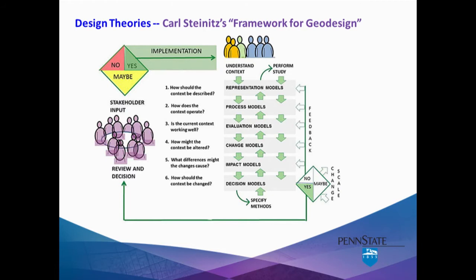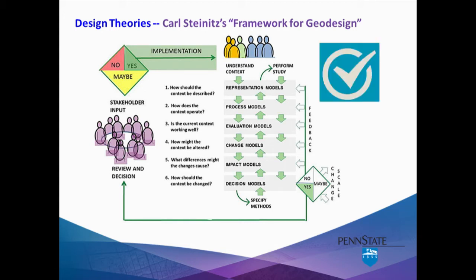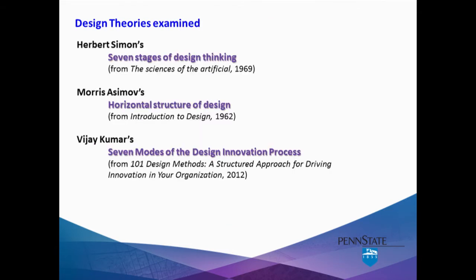Now there are, of course, many design theories, but I thought it would be valuable to compare a couple of those to discover commonalities which can then be matched to the widely recognized geodesign process — Dr. Steinitz's framework for geodesign. In a lightning talk, I don't have time to explain this framework; I trust many of you are familiar with it. My aim is to understand the essential aspects of other theories and compare those to Dr. Steinitz's approach, and when those theories align, you'll see a check mark. Today I'm going to briefly review three design theories: Herbert Simon's Seven Stages of Design Thinking, Morris Asimov's Horizontal Structure of Design, and Vijay Kumar's Seven Modes of the Design Innovation Process.